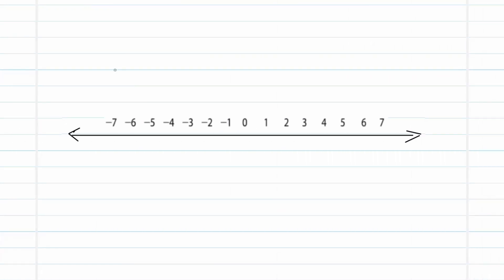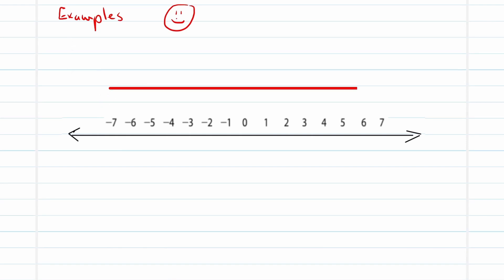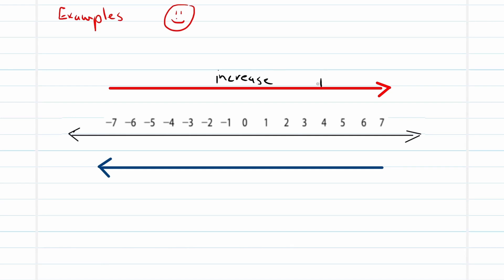Let's look at a few examples, because examples always help you to understand. Let's think about negative and positive numbers again — integers. Direction is the best way to understand this using a number line. If we go to the right, we are increasing. If we go to the left, we are decreasing. To increase a number you add, and when we decrease we are subtracting. This will help you tremendously to understand how to work with integers.